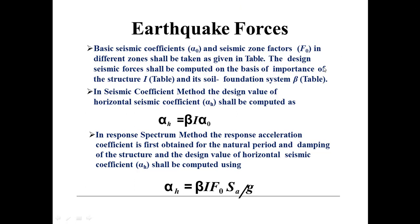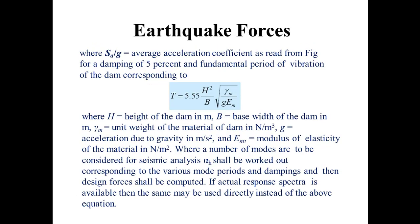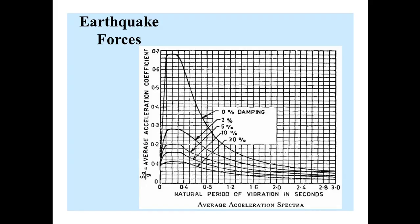In the response factor method, the response acceleration coefficient is first obtained from the natural period and damping of the structure. The design value of the horizontal seismic coefficient alpha_H is computed as: alpha_H = beta × I × F0 × (SA/G), where beta is the soil foundation system value taken from the table, I is the importance of the structure, F0 is the seismic zone factor, and SA/G is the average acceleration coefficient whose value is taken from the figure.